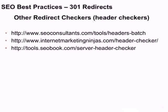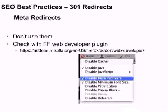If you want to check redirect checkers, do a Google search for header checkers — a couple available ones are Internet Marketing Ninjas, SEO Consultants, and SEO Book. You can test for different types of redirects with the Firefox web developer plug-in, which is also available for Chrome. It'll test for meta redirects — if you're trying to discover what's going on on a site and they have a meta refresh zero, you can disable that meta redirect and determine if that's the case by looking at the code. Make sure your company is not using the meta redirect — you want to be using a 301 wherever possible.